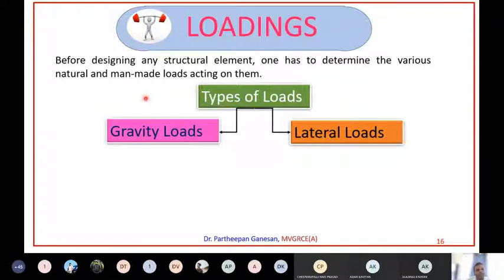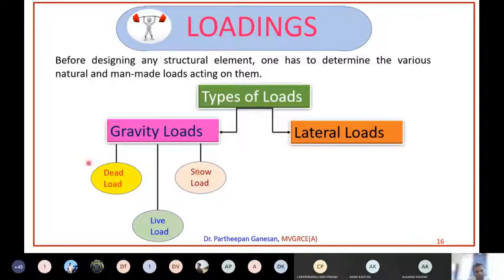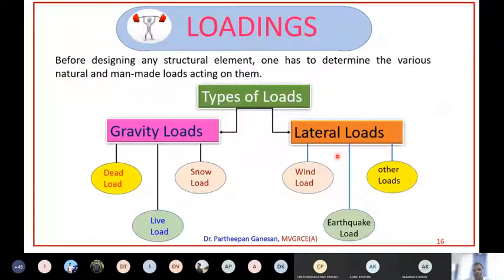Gravity load is the load which is acting vertically downwards. There are three types of gravity loads: dead load, live load, and snow load. Lateral loads are wind loads because wind is always horizontally applied on the building - so wind load is a lateral load. Earthquake load is also a lateral load, and other environmental loads can also be considered as lateral loads.